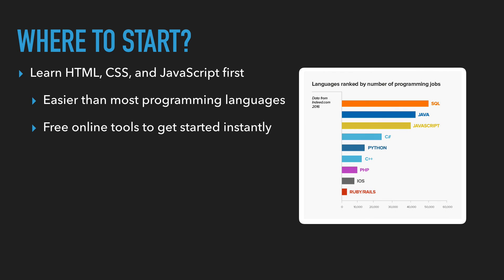Now take a look at this graph on the right. It's listing programming languages by the number of jobs that use that programming language, and you can see that JavaScript is ranked third. So again, another key thing is to learn JavaScript because there are many, many jobs available out there for you.